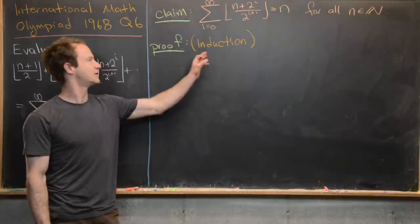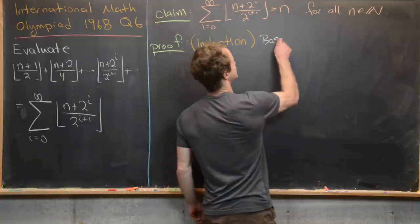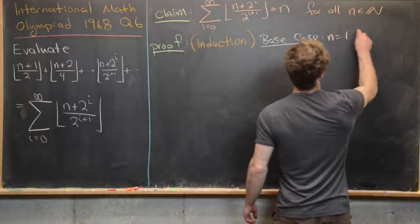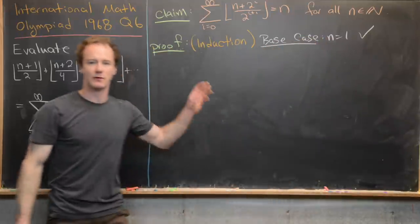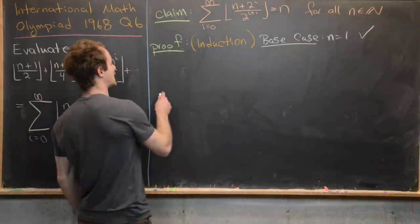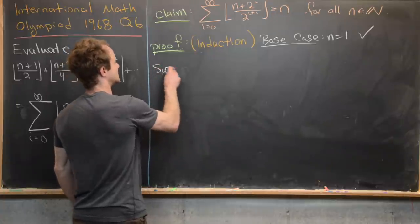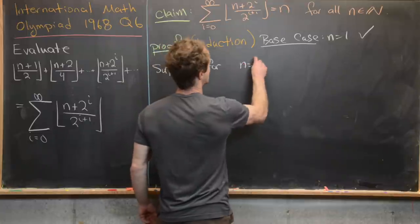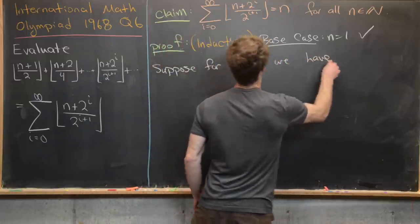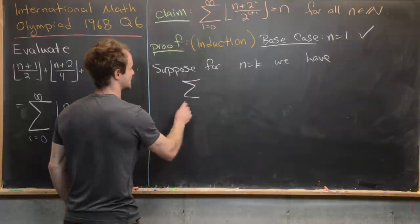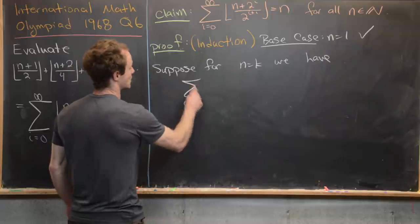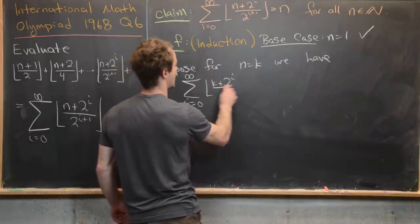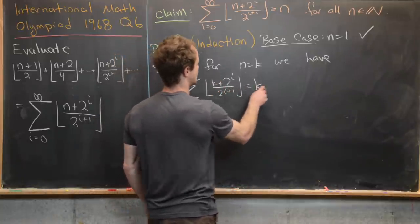We'll prove this by induction. The base case n = 1 was handled above. For the induction hypothesis, we suppose that for n = k, the sum as i goes from 1 to infinity of the floor of (k + 2^i) / 2^(i+1) equals k.